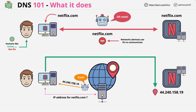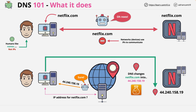So conceptually, the main piece of functionality which DNS provides is that it's a huge database which converts DNS names — so netflix.com — into IP addresses. I hope that this makes sense so far. At this point, it sounds just like a database, so nothing complex. And you might be asking yourself,